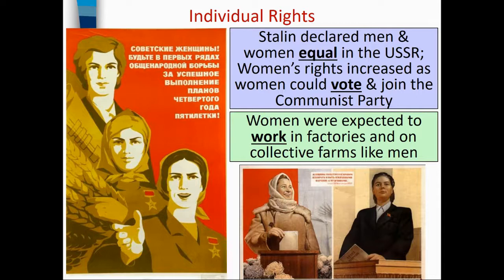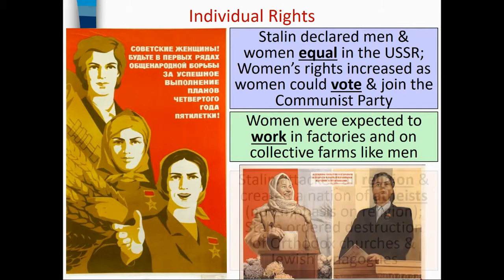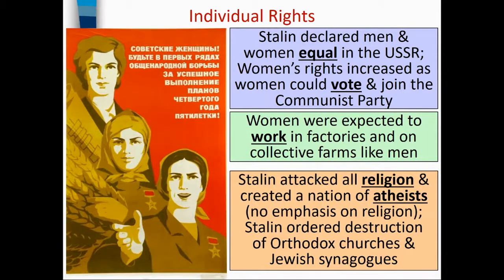Stalin declared men and women equal in the USSR. Women's rights increased as women could vote and join the Communist Party, though women were also expected to work in factories and on collective farms just like the men. Stalin attacked all religion and created a nation of atheists, ordering the destruction of Orthodox churches and Jewish synagogues.